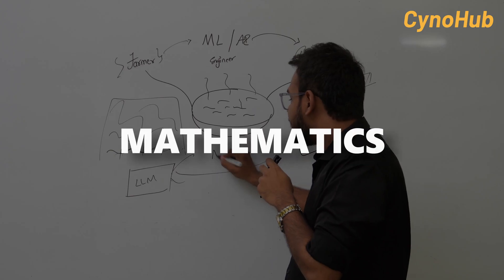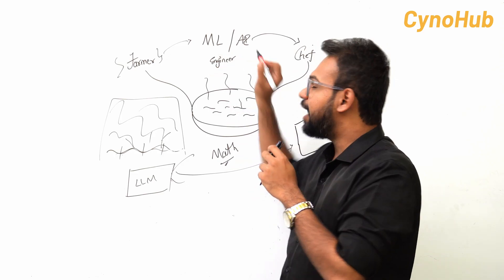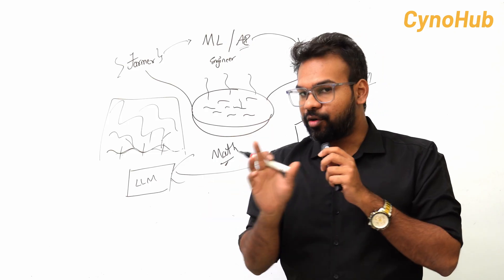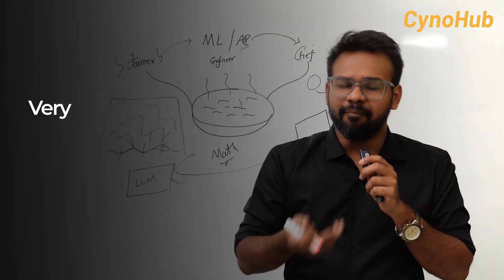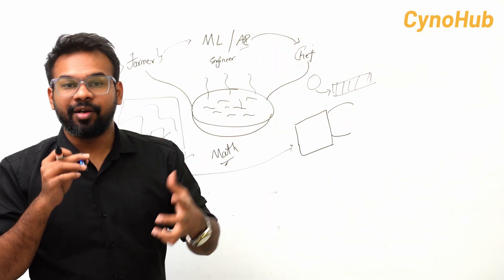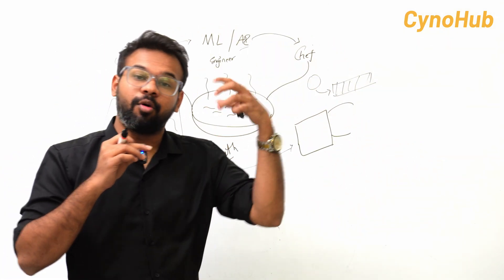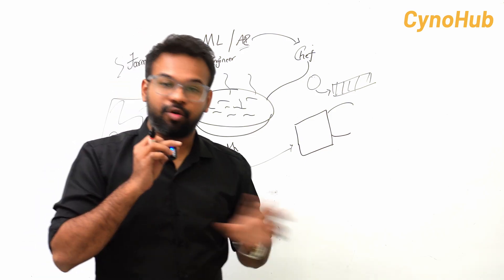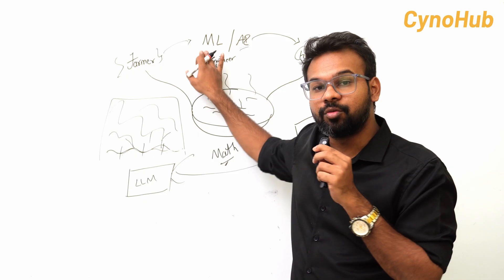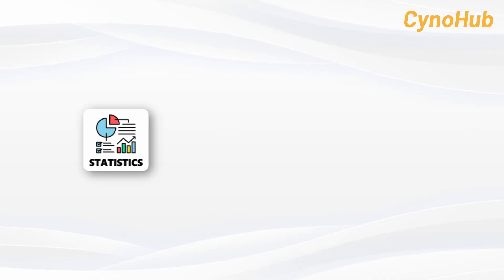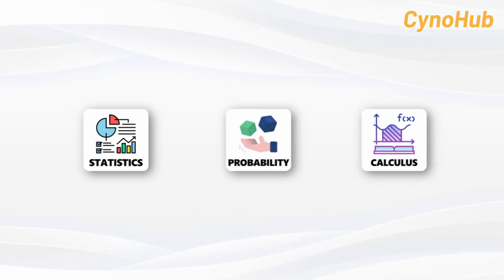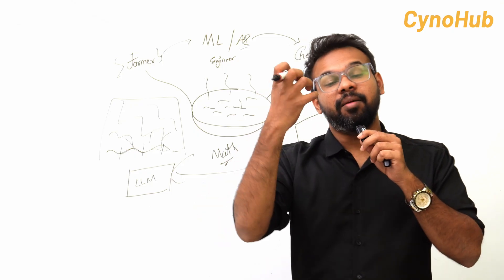Next, let's talk about mathematics. As an AI engineer, you need very minimal mathematics. In fact, it's very minimal — you can barely notice it. But for a machine learning engineer, you need to understand statistics, probability, and calculus. These are very important.